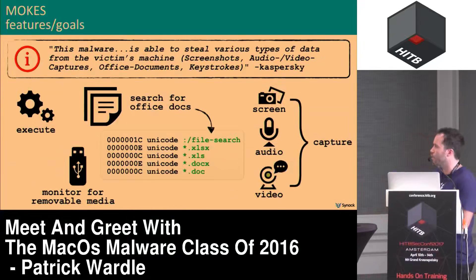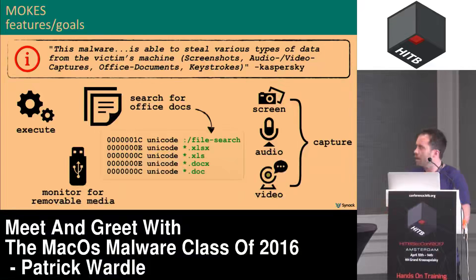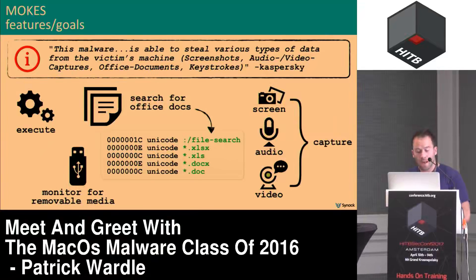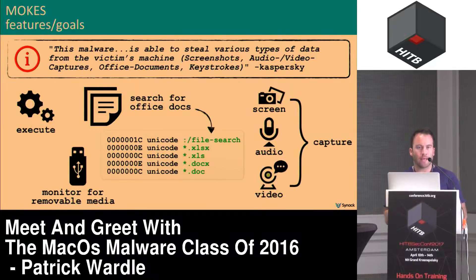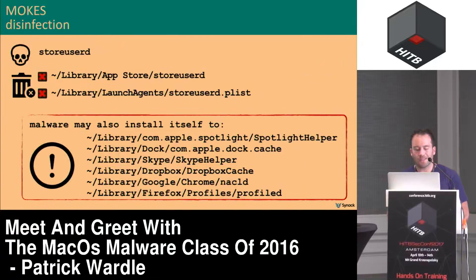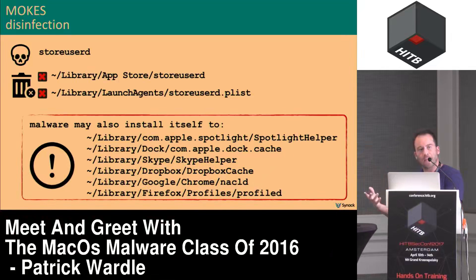Mox is decently interesting because it has some neat features. It supports standard download and execute commands, has search capabilities for a variety of office documents, can capture screen, audio, and video — not that common in Mac malware — and also monitors for removable media. If someone plugs in a USB stick on an infected host, the malware can enumerate that and exfiltrate interesting documents. In terms of disinfection, it's a little complicated because the malware can install itself under a handful of names. Just look for any of those names, find the match, delete the binary and the plist.